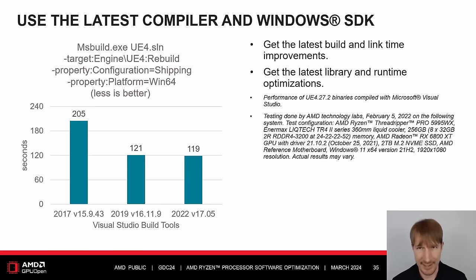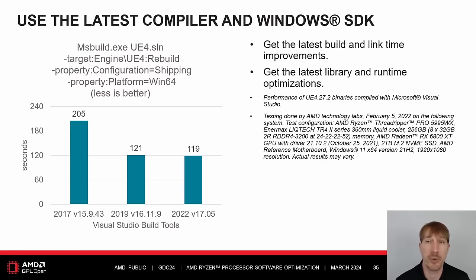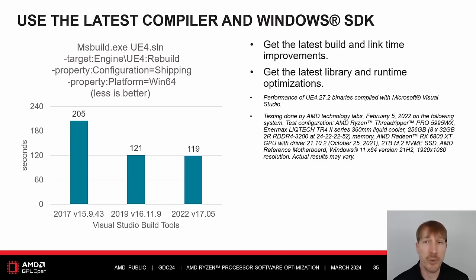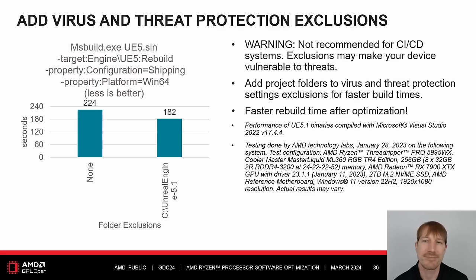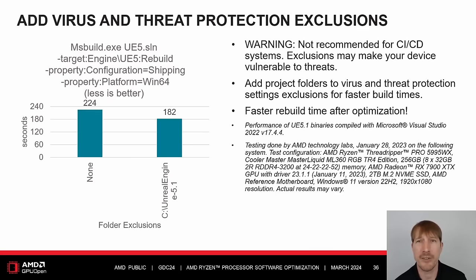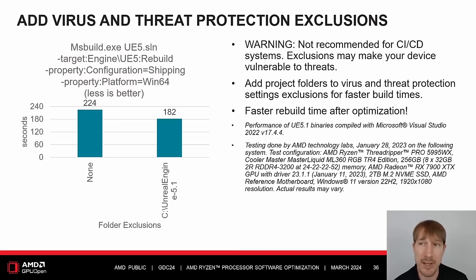Use the latest compiler and Windows SDK to ensure you get the latest build and link time improvements. Rebuilding UE4.27 is much faster in Visual Studio 2022 and 2019 compared to Visual Studio 2017. Also ensure you're using the latest C runtime optimizations, especially for memcpy and memset. Some Visual Studio 2022 updates improved indexing performance and vectorization. Windows Defender scans can greatly slow down some workflows. Windows 11 enabled the Windows Defender sandbox feature by default, which greatly improved security but also increased file copy and file compress times. Add project folders to virus and threat protection settings exclusions for faster build times — this system showed a 20% reduction in build time.